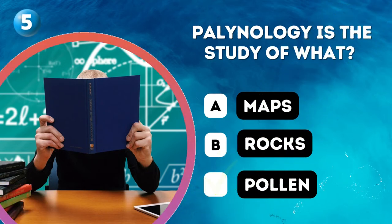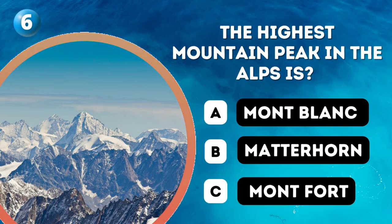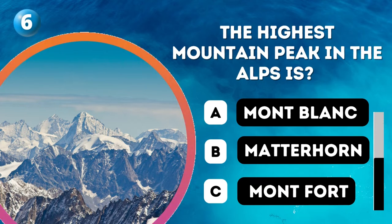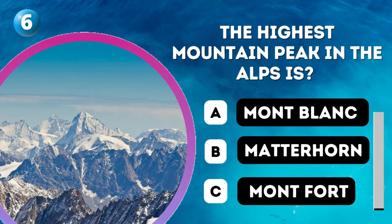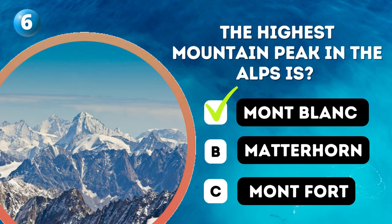Question 6. The highest mountain peak in the Alps is: A. Mont Blanc, B. Matterhorn, C. Mont Fort. Answer: Mont Blanc.